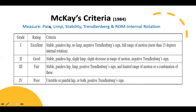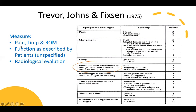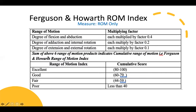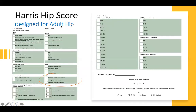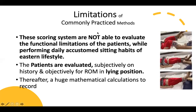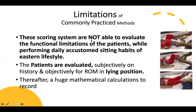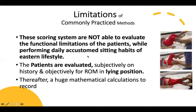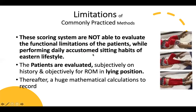McKay's criteria measures pain, limp, stability, Trendelenburg, and range of motion. Trevor and Johnson similarly measure pain, limp, and function described by the patient — which is unspecified and not standardized. Ferguson and Howard check range of motion only. Harris hip scores are basically designed for adult hips. Limitations of these commonly practiced methods are that these scoring systems are not able to evaluate the functional limitations of patients while performing daily accustomed sitting habits of an Eastern lifestyle.